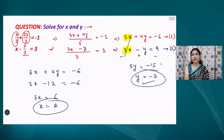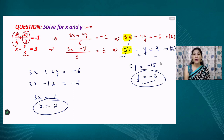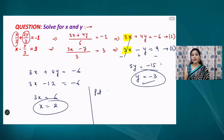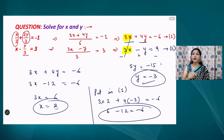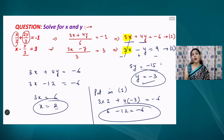Substituting y = −3 into equation number one: 3x + 4(−3) = −6, which gives x = 2. The final answer is x = 2 and y = −3. To verify, put these values back into either equation: 3(2) + 4(−3) = 6 − 12 = −6, which matches. Both sides give the same value, confirming the answer is correct.